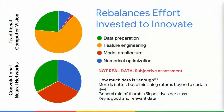Without feature engineering means without explicitly writing rules. In traditional computer vision, we spend a lot of time writing the rules that a machine should follow to make a certain prediction task. In convolutional neural networks, we actually spend very little time in feature engineering and writing these rules. Most of the time we spend in data preparation, numerical optimization, and model architecture.